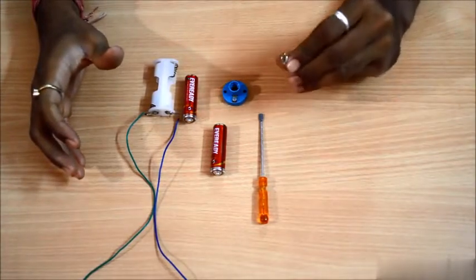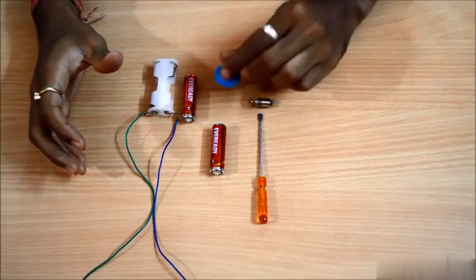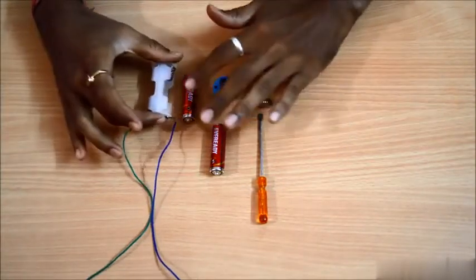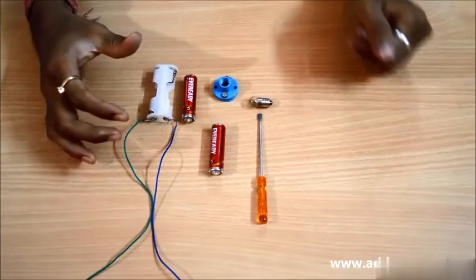I have a small bulb which you would have probably seen in a torch. I have a bulb holder, I have a battery holder and two batteries to go into it, and I have a screwdriver. So let's begin with the activity.